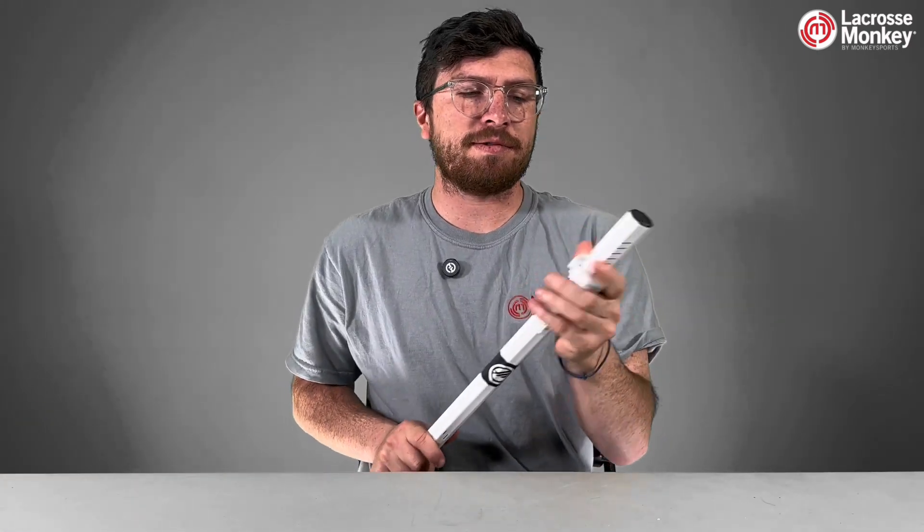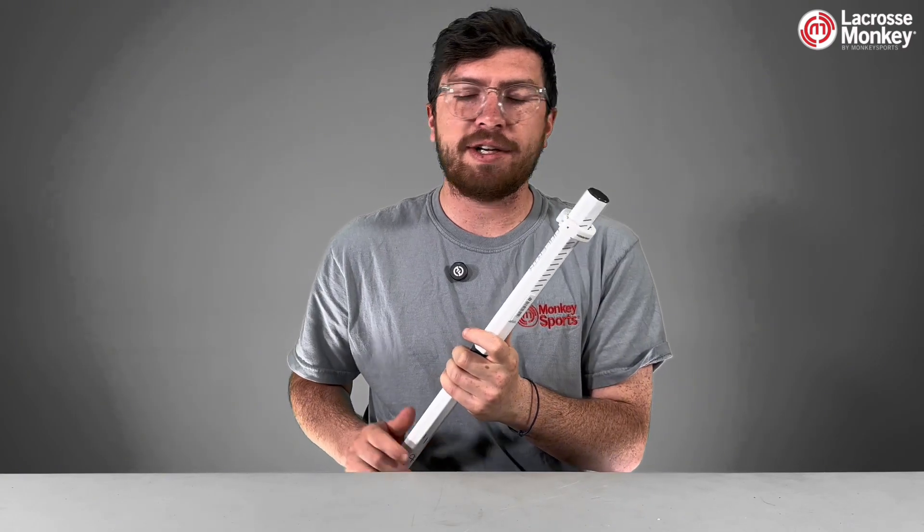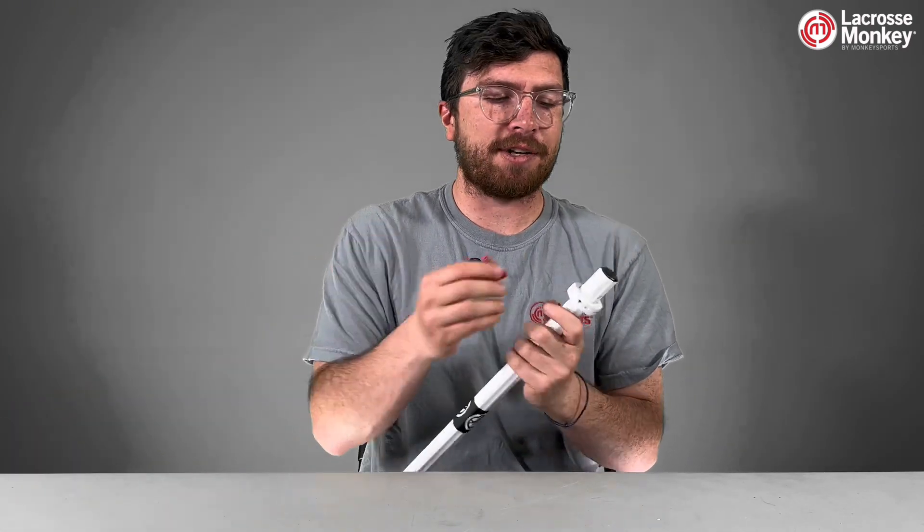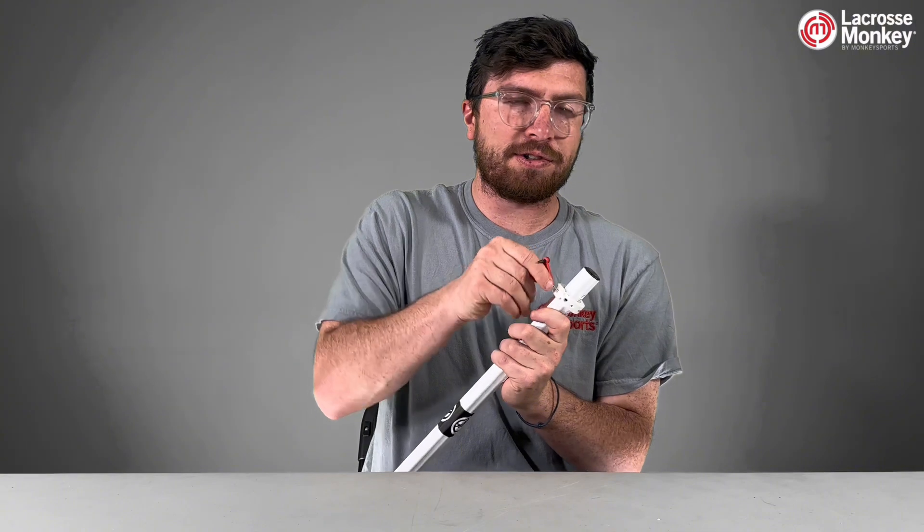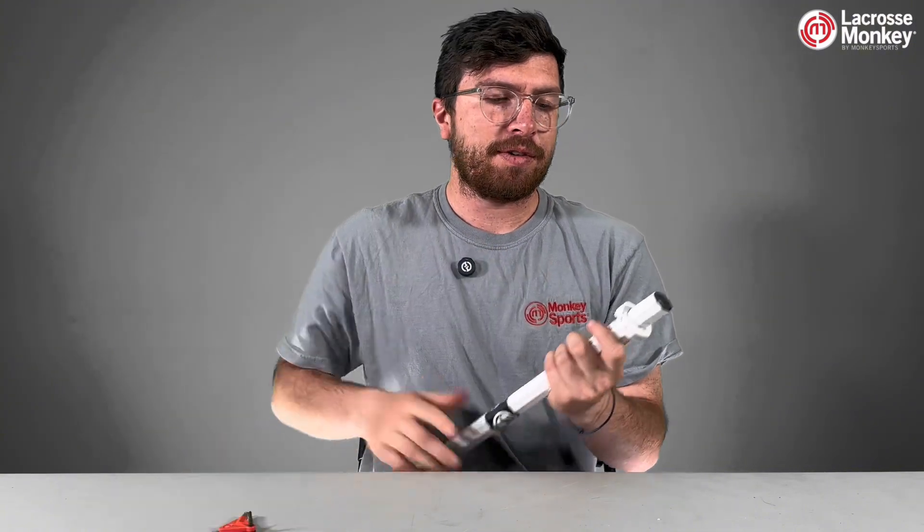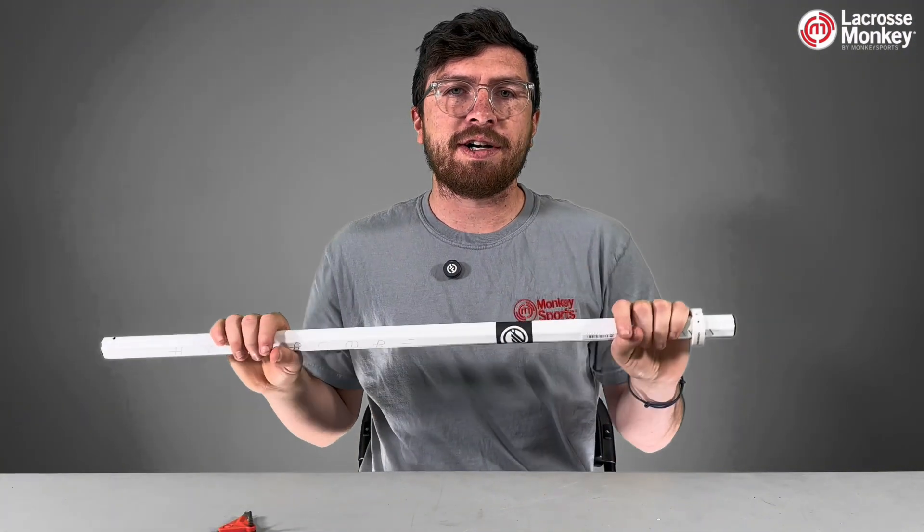Like other Maverick shafts, this comes with their sliding end cap. You can slide this up and down wherever you like, and whenever you want to lock it in place, they give you this screwdriver set. You can just screw this little screw in here, and now this is locked in place, and you can rely on this all day long.